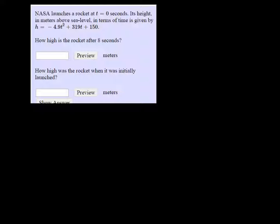NASA launches a rocket at t equals 0 seconds, and its height in meters above sea level in terms of the time is given by the function h equals negative 4.9 t squared plus 319 t plus 150.